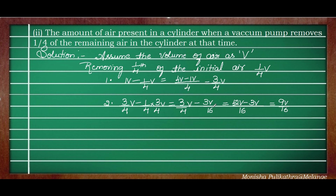Two strokes are enough to check if it is AP. Initial volume V is A1, after first stroke 3V/4 is A2, and after second stroke 9V/16 is A3. We now find the common difference.